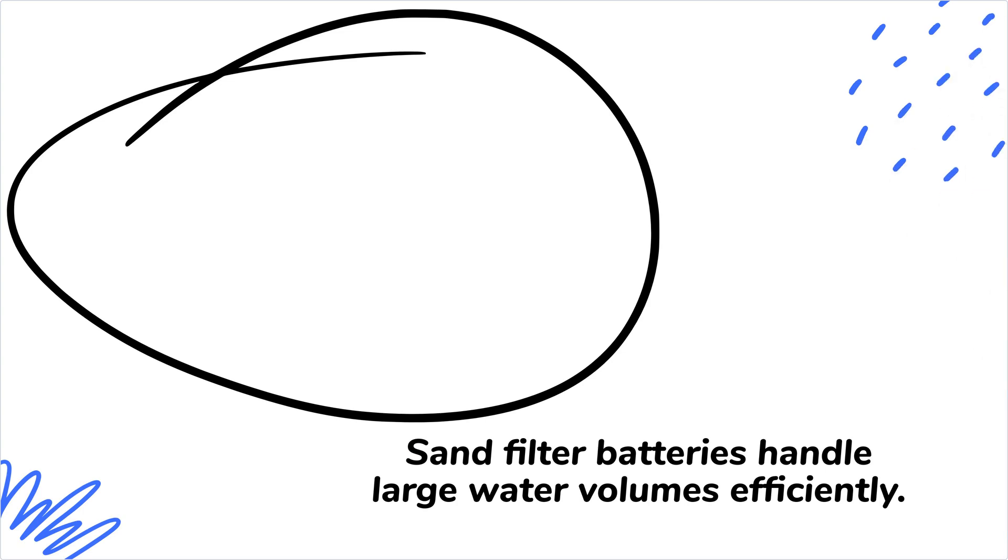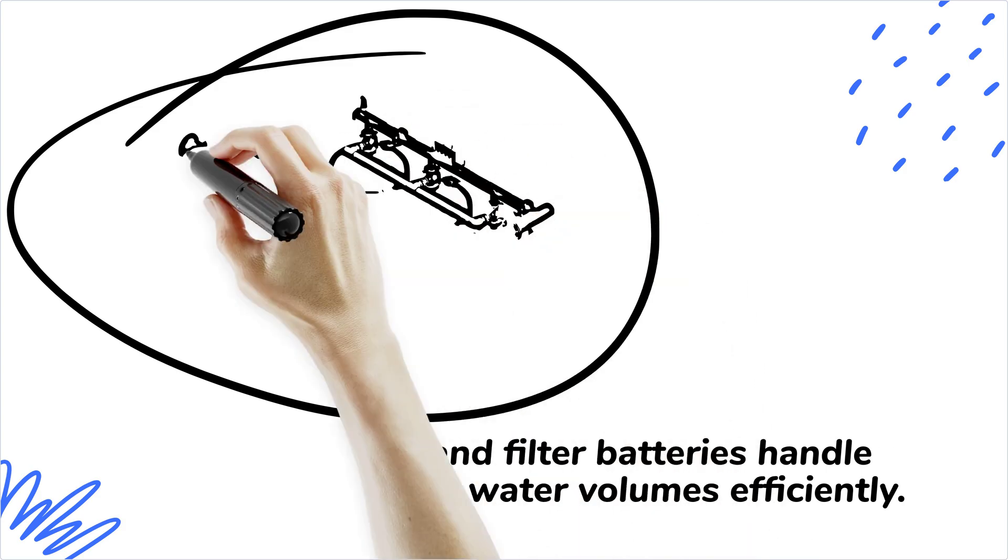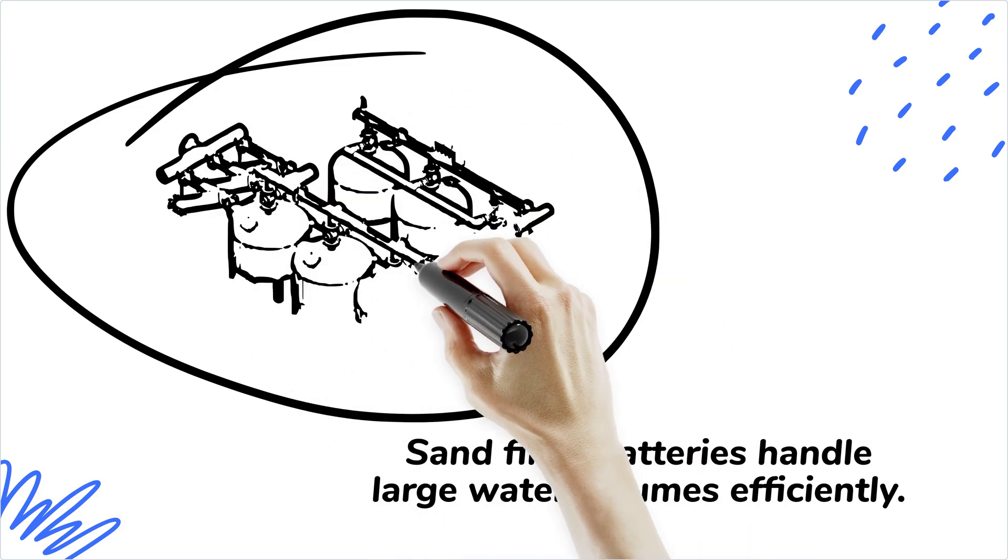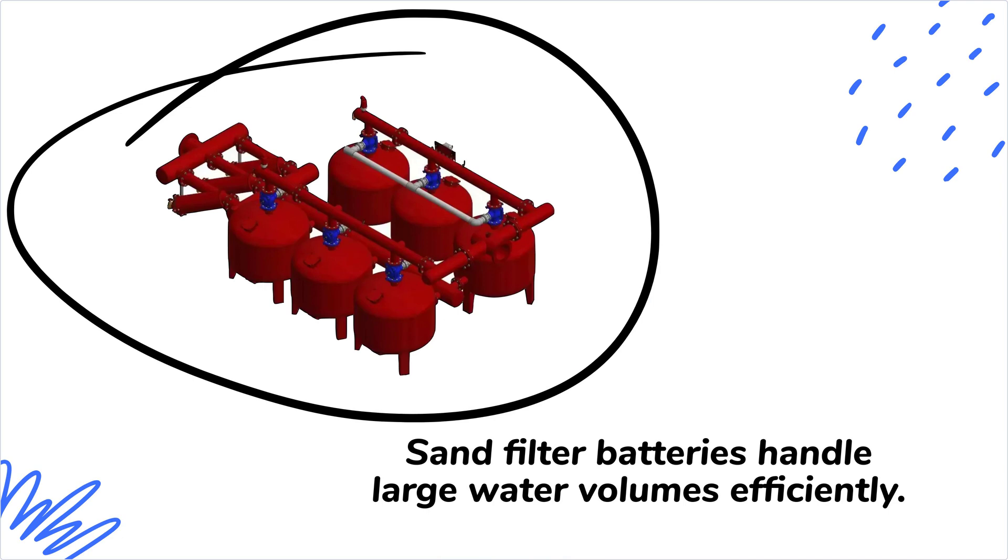By distributing water through multiple chambers simultaneously, sand filter batteries ensure that even the most demanding applications have access to clean filtered water, suitable for expansive agricultural areas and industrial needs.